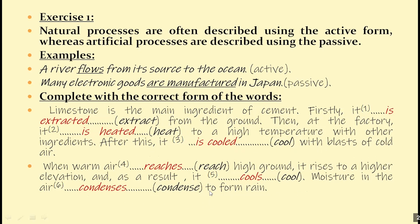This second example is different. Here we're talking about a natural process that happens in nature without any intervention from human beings, and that's why we're going to use the active voice. When warm air reaches high ground, it rises to higher elevation. As a result, it cools. Moisture in the air condenses to form rain.